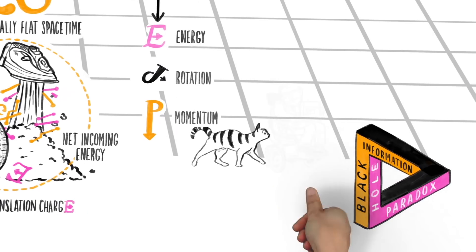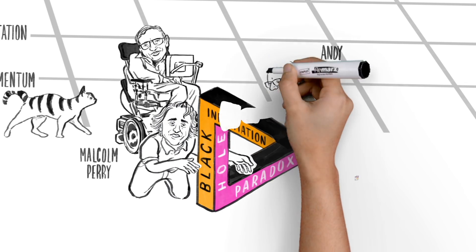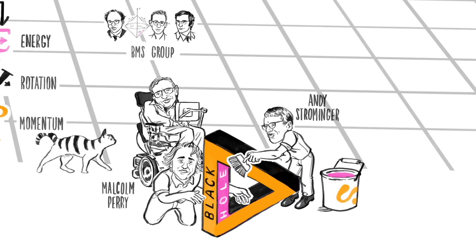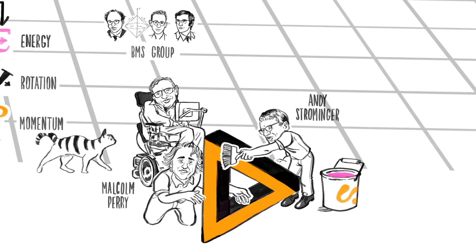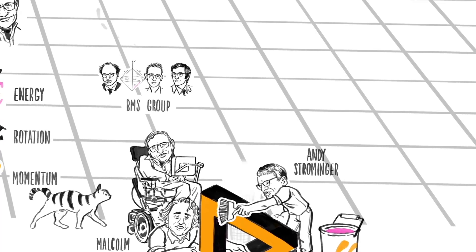It is these conservation laws that have given extraordinary and unexpected insight into processes and gravitational theories. In the last year, together with my collaborators Malcolm Perry and Andy Strominger, I have been working on using the BMS group and its associated conserved quantities to find a possible resolution to the information paradox.